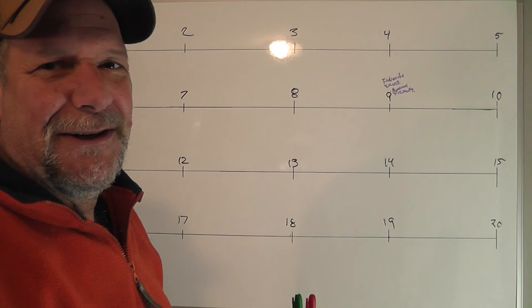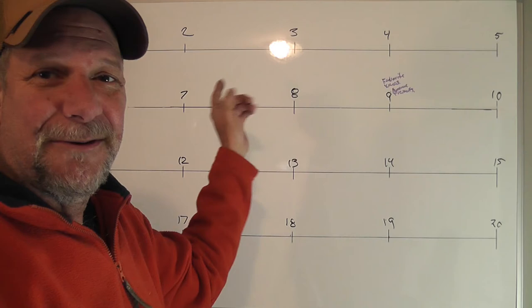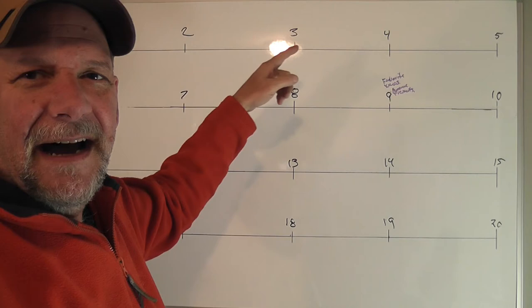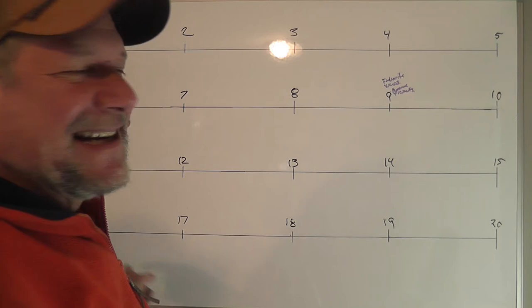So the first thing I want you to do is get yourself a whiteboard. After you get yourself a whiteboard, I want you to do five lines or four lines across. Make a timeline from 1 to 5, 6 to 10, 11 to 15, and 16 to 20. And just start filling it in.